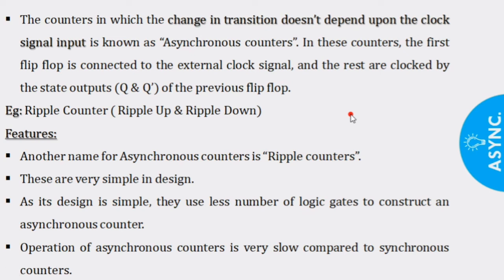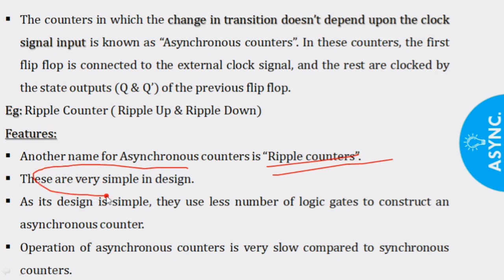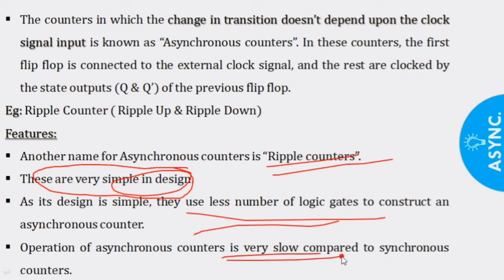The best example of an asynchronous counter is the ripple counter. In ripple counters we have ripple up counters and ripple down counters. Another name for asynchronous counters is ripple counters. The design of asynchronous counters is very simple because only one external clock pulse is required, and they use fewer logic gates than synchronous counters. However, the operation is very slow compared to synchronous counters. In the next sessions we will discuss asynchronous counters and their types. Thank you.